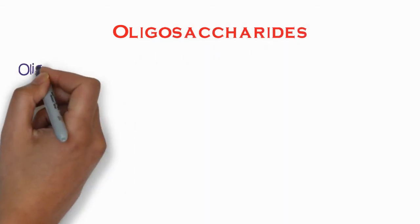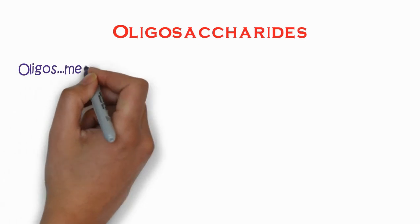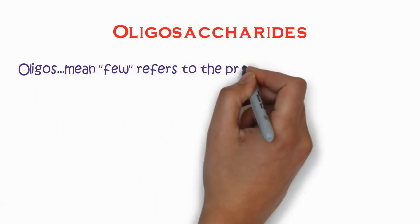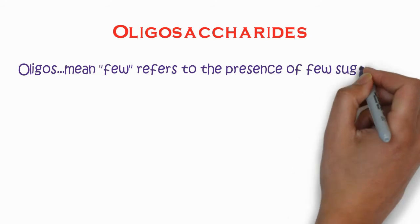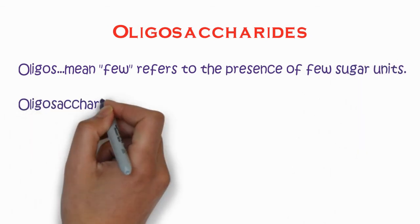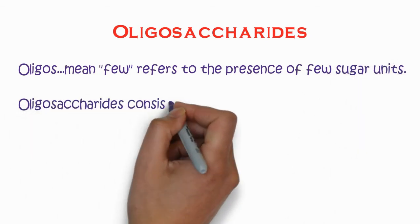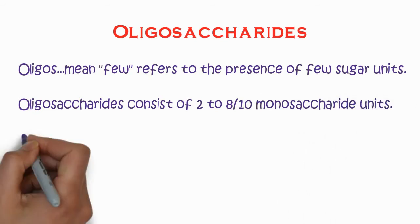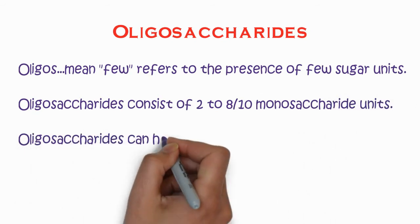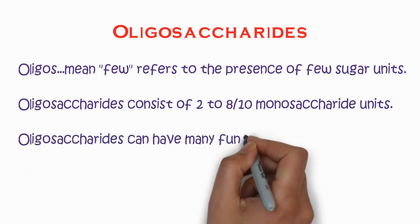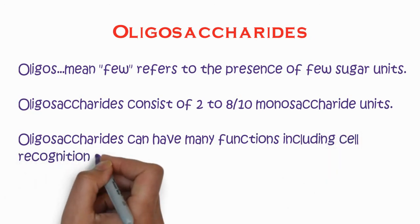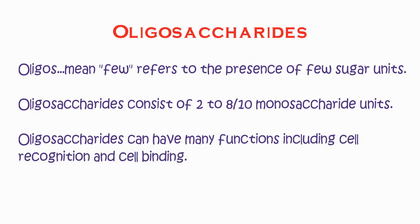Oligosaccharide is the next class of carbohydrate. 'Oligo' means few, referring to the presence of few sugar units. Oligosaccharides consist of 2 to 8 or 10 monosaccharide units. They can have many functions including cell recognition and cell binding.